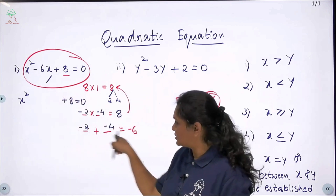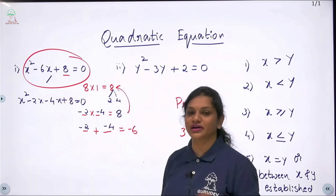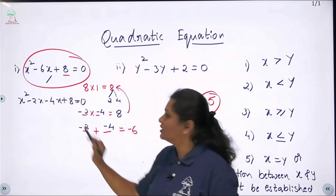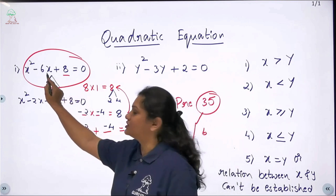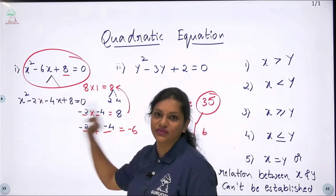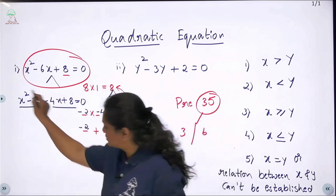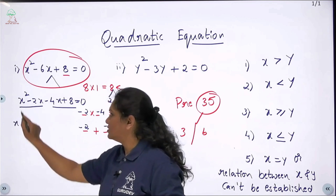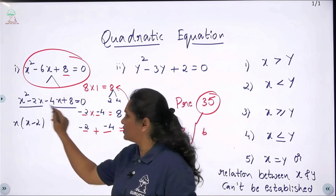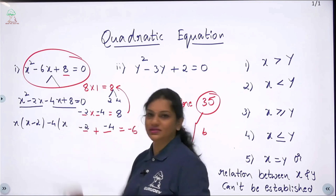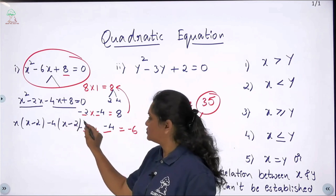Now split the middle term −6x into −2x and −4x. So the equation becomes x² − 2x − 4x + 8 = 0. Take x common from the first two terms: x(x − 2), then take −4 common from the last two terms: −4(x − 2). Signs are important: minus × minus gives plus, giving −4(x − 2) = 0.